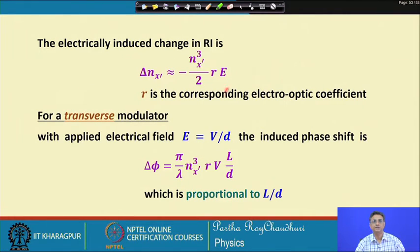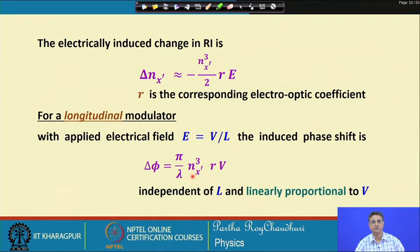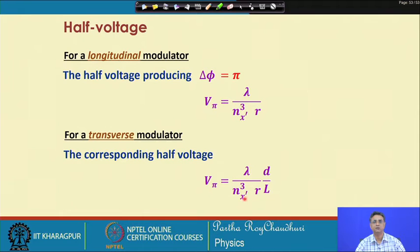For the transverse modulator, V/d is the electric field, making the induced phase proportional to l/d. The half-wave voltage for the longitudinal case is obtained by setting delta-phi equal to pi, giving a value expressed in terms of the refractive index properties. For the transverse modulator the corresponding half-wave voltage is similarly derived. These are the voltages required to switch the modulator from state 1 to state 0 or vice versa.